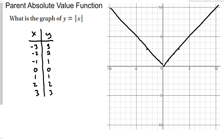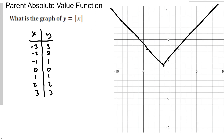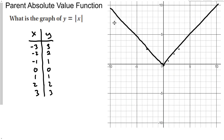What we're going to do with this function is shift it. We are going to take this graph and move it up, down, left, and right. That's the whole idea — we're going to take this absolute value function, shift it up, down, left, and right. It's going to keep the same shape, but it's going to start in a different position.